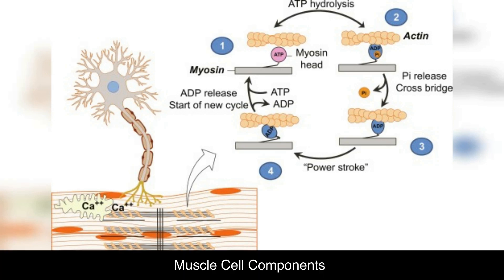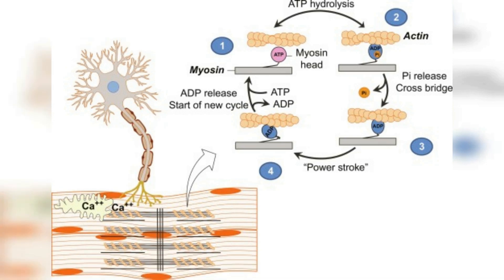Muscle Cell Components. Muscle cells, or fibers, contain several essential components that contribute to muscle contraction. The sarcomeres, which are the basic unit of muscle contraction, are composed of two types of protein filaments: actin and myosin. The actin filaments are thin, while the myosin filaments are thick. These filaments overlap with each other, forming the characteristic striated pattern of muscle cells.